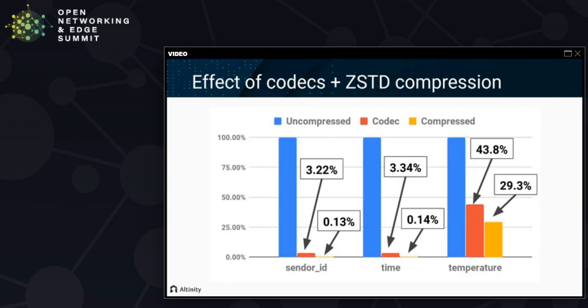The same sort of compression is available for the time column, with similar behavior. Temperature responds less well — the codec used in that case does not reduce the data as much, so compression is not as great. The key point, though, is that by reducing the amount of data, we can dramatically speed up I/O because there's simply less to read from storage.